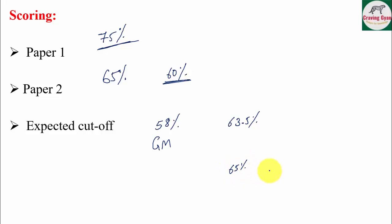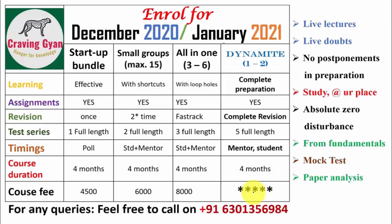Since the paper level was really tough and many students appeared, the cutoff may fall to around 61%. If you score at least 61%, you are in the safe zone. If you are writing the UGC NET exam next time in December 2020 or January 2021, Craving Gyan has launched startup bundle, small groups, and all-in-one package courses.